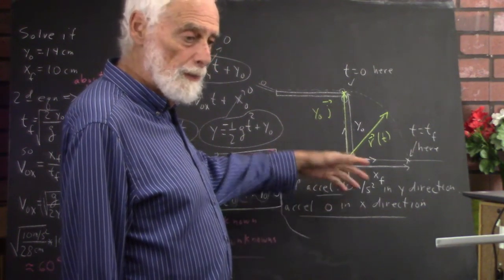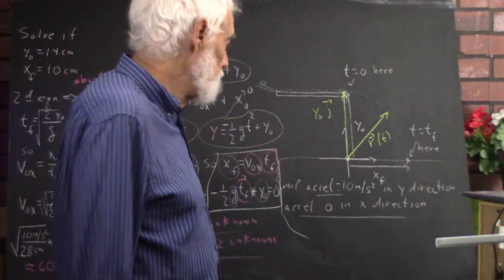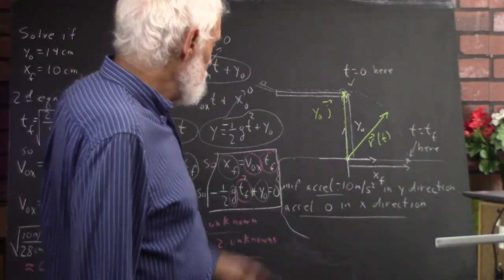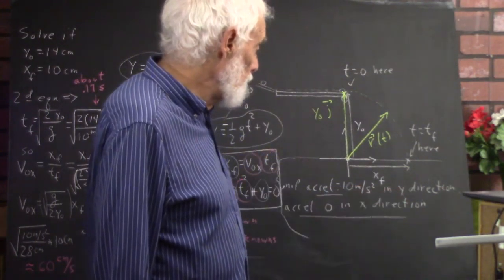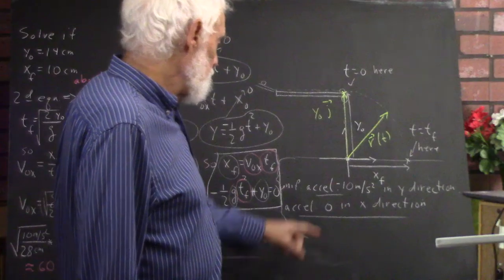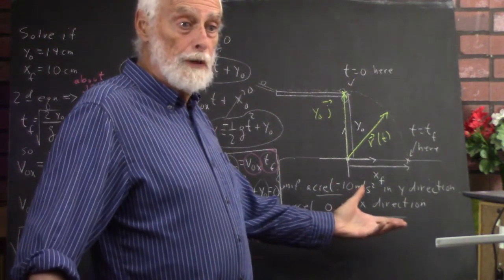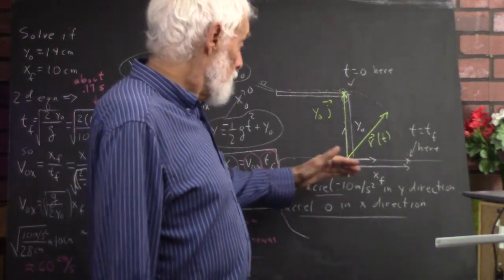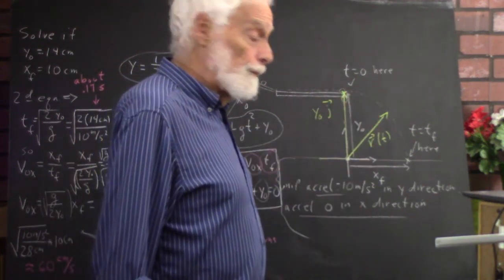g in the downward direction, which I approximate as ten meters per second squared. That's only off by two percent and it's easy to calculate with. That's in the y-direction, and zero acceleration in the x-direction. That's all you've got to know to set this up.